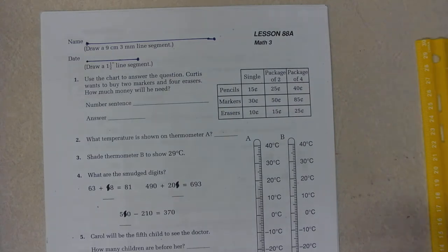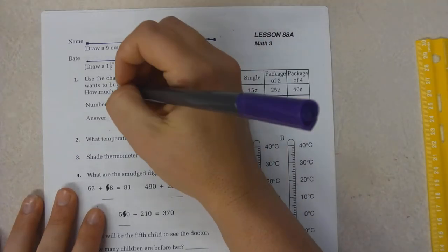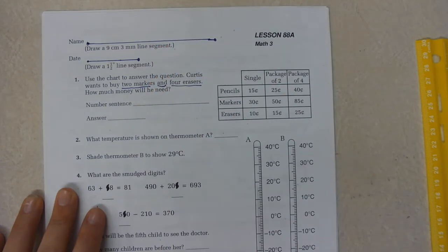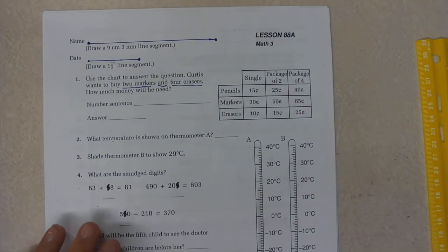Use the chart to answer the question. Curtis wants to buy 2 markers and 4 erasers. So I'm going to underline 2 markers and 4 erasers. This word 'and' usually means to add or multiply. How much money will he need?